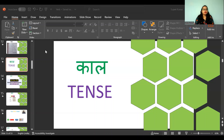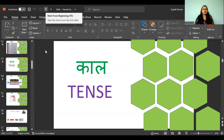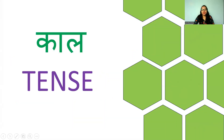So we have completed Kriya — what are the action words and all, Kriya kise kehte hain, all those. Now today we will do — we are going to learn about Kaal. Have you heard about it? Kaal — what is Kaal? Kaal means tense.